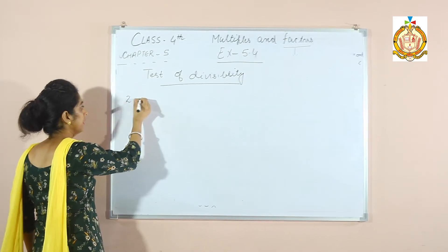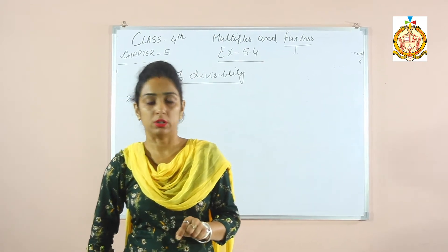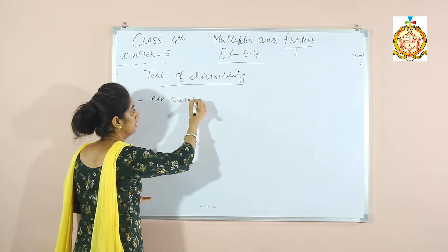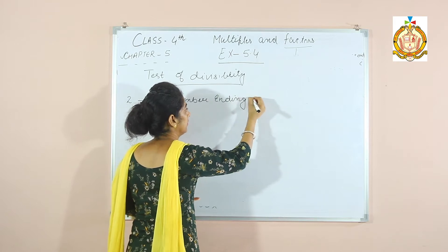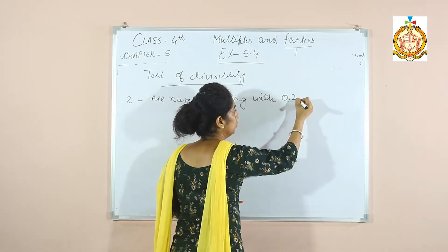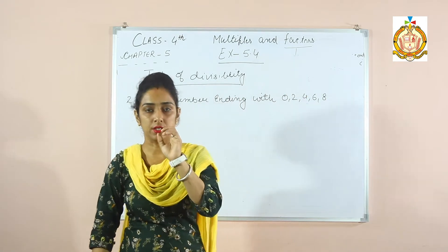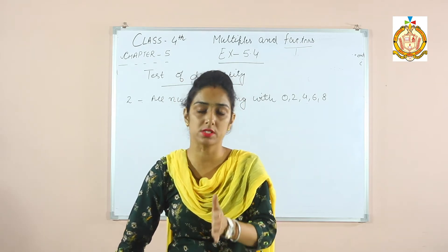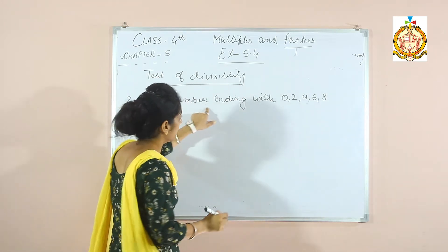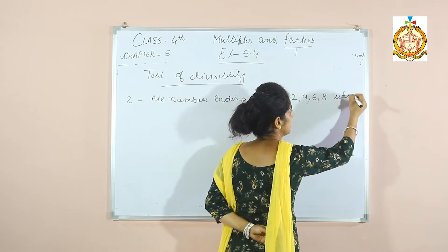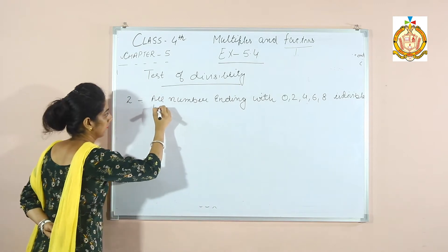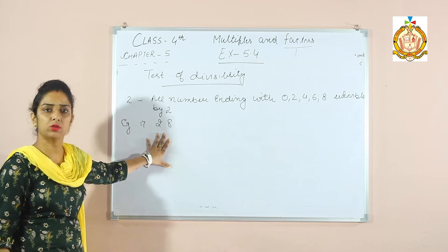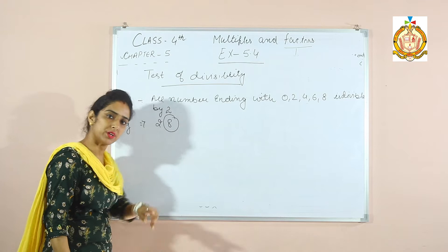First, divisibility by 2. All numbers ending with 0, 2, 4, 6, or 8 are divisible by 2. For example, 28 — its last digit is 8, so it is divisible by 2.